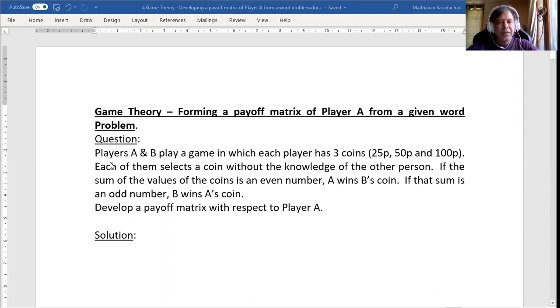So the question is: Players A and B play a game in which each player has three coins - 25 paise coin, 50 paise coin, and 100 paise coin. Each of them selects a coin without the knowledge of the other person. If the sum of the values of the coins is an even number, A wins B's coin. If that sum is an odd number, B wins A's coin.